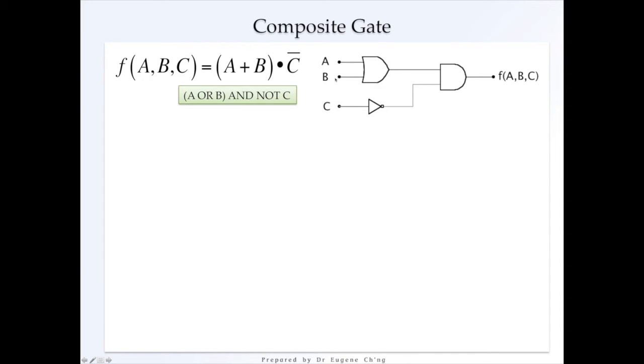You have an OR gate here, so it's A OR B. And over here, you have a NOT C. So you construct NOT C first.